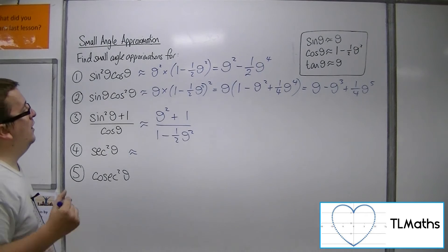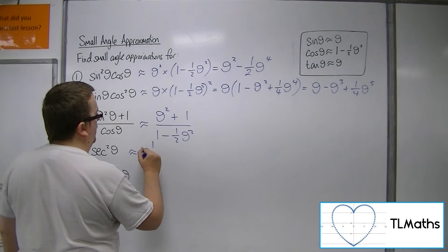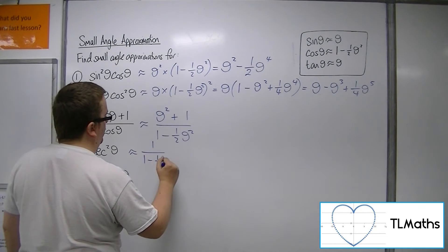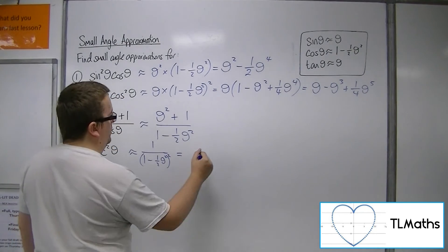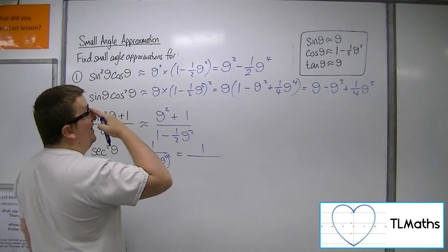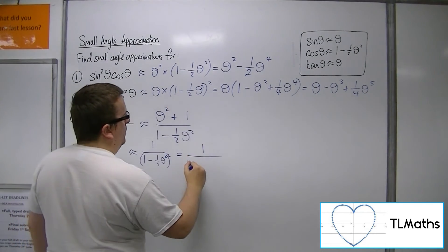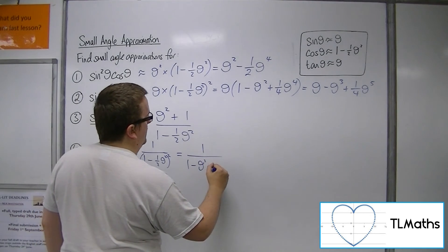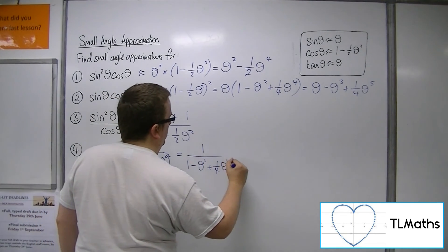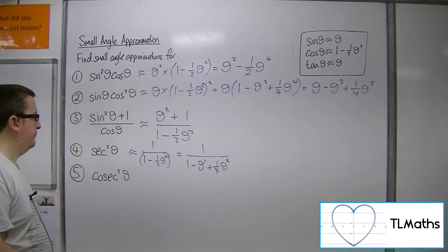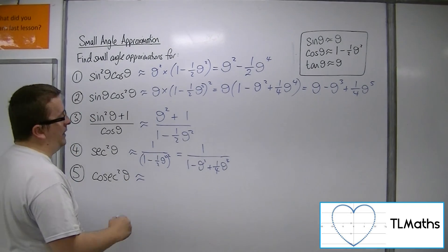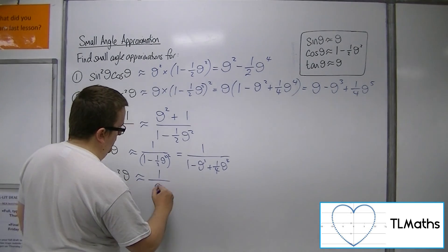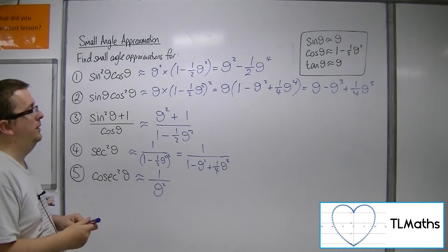Sec squared, which is 1 over cos squared, so that's 1 over 1 minus 1 half theta squared squared. And then finally cosec squared, well that's 1 over sin squared, so that would be 1 over theta squared. OK.